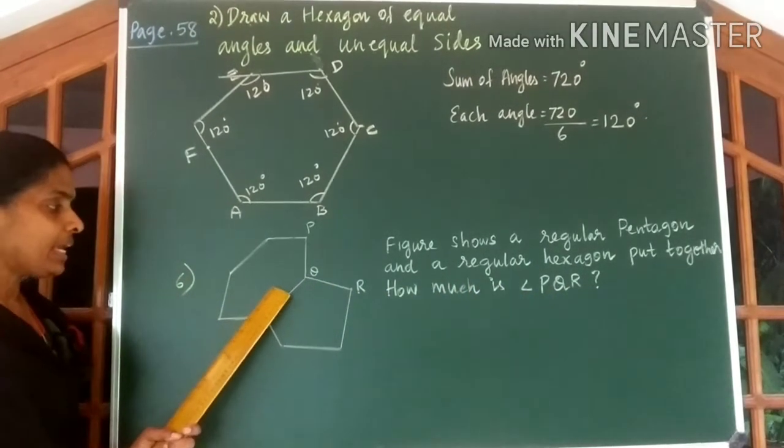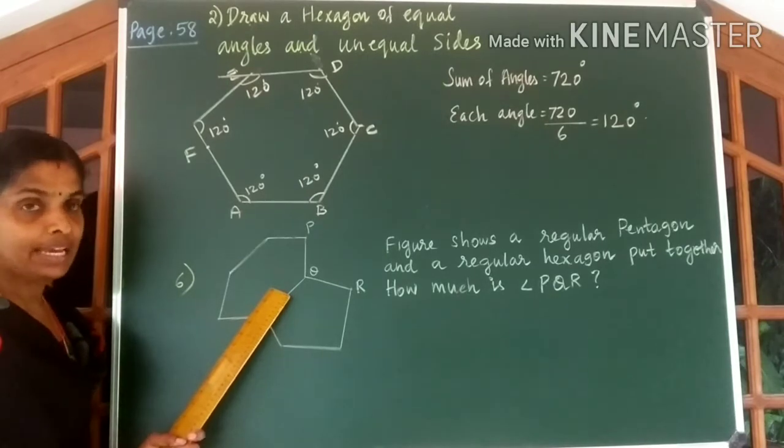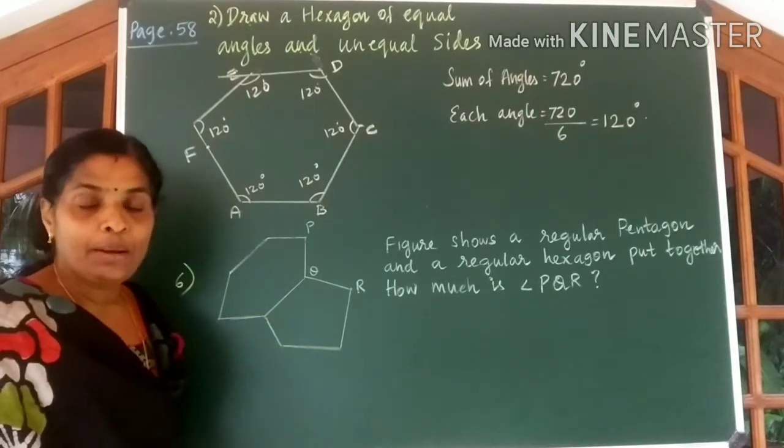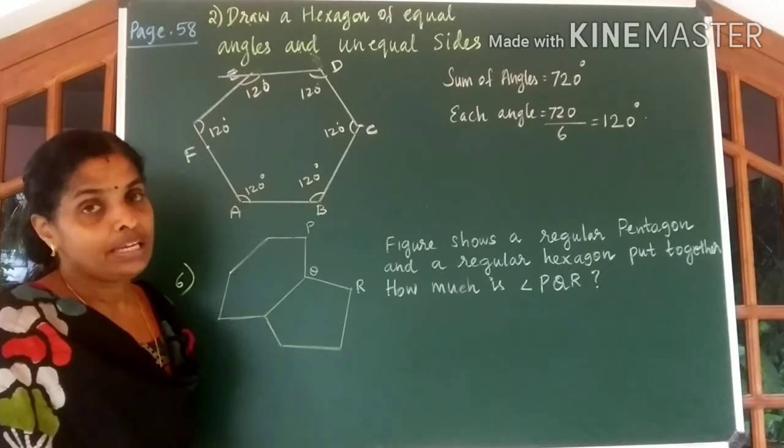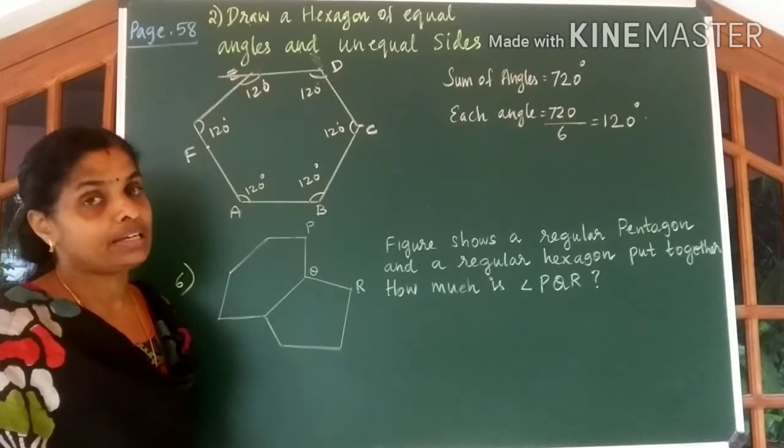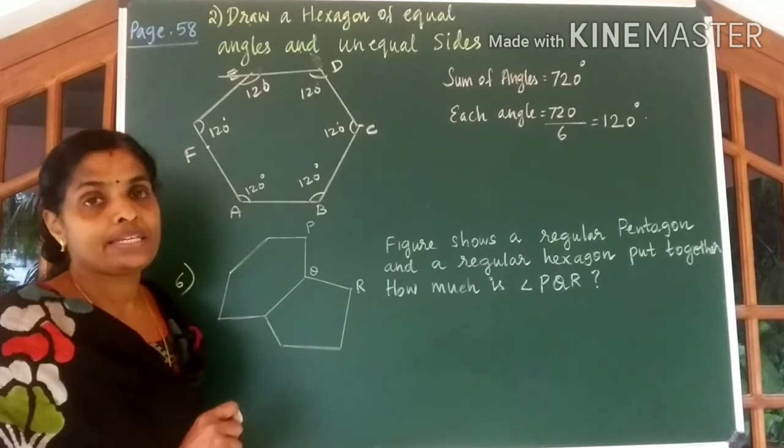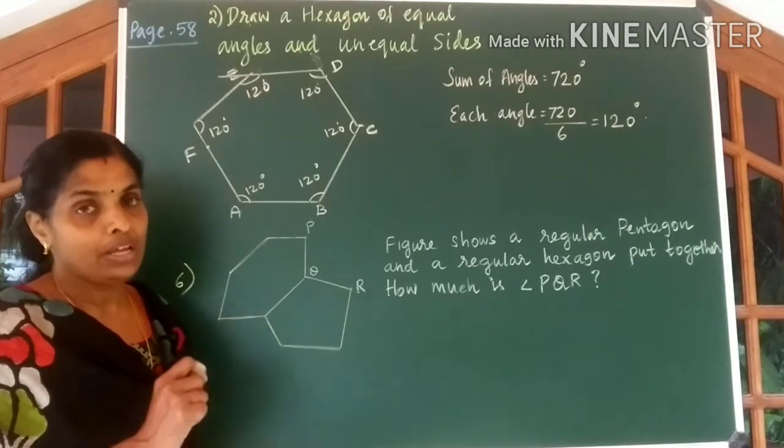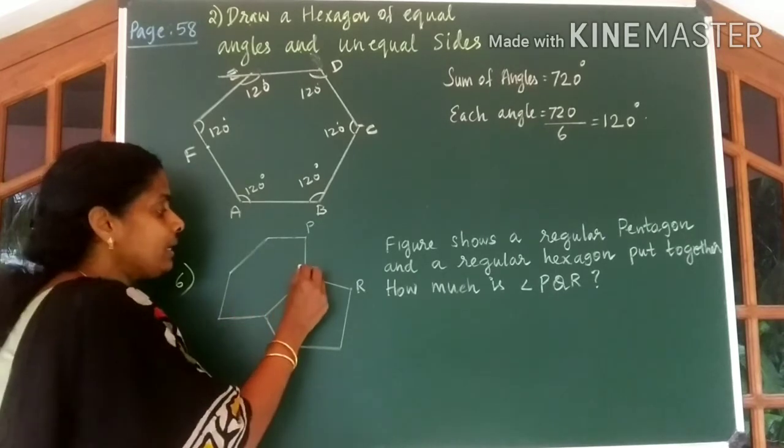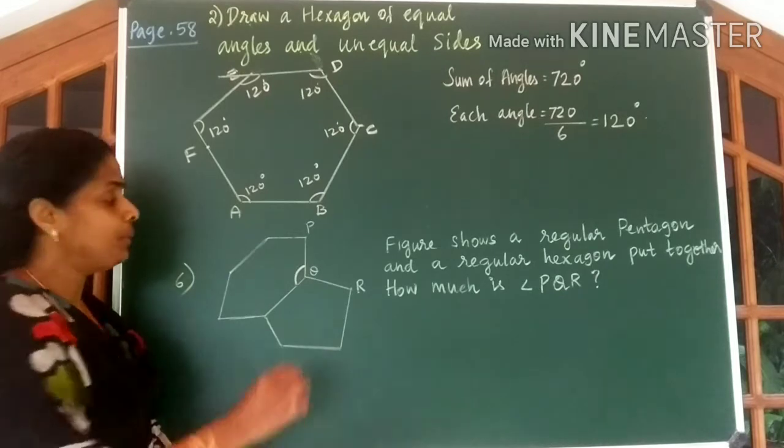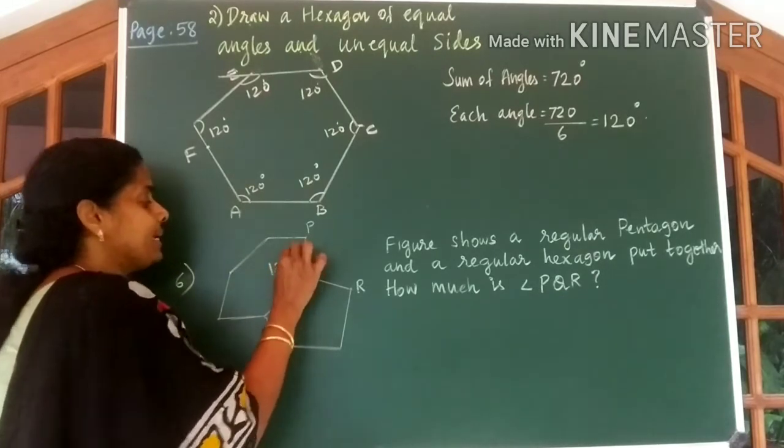You can see a regular hexagon and a regular pentagon. Regular pentagon means a pentagon with all sides and all angles equal. A regular hexagon, all sides and all angles are equal. We know each angle of this regular hexagon to be equal to 120 degrees.